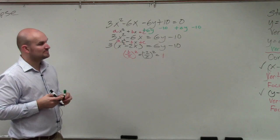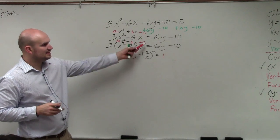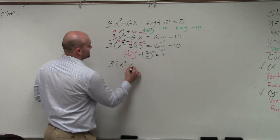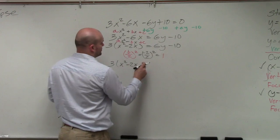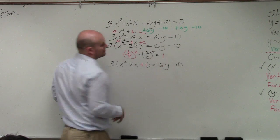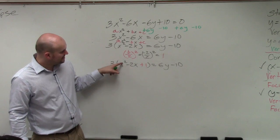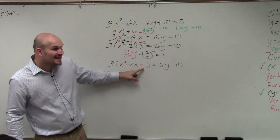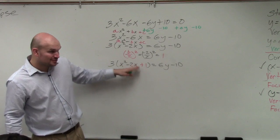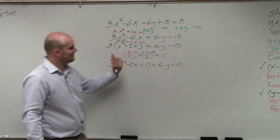b divided by 2 squared gives you the value c that you're looking for. So watch what happens. 3(x² - 2x + 1) = 6y - 10. I'll get to the whole adding on both sides in just a second. What I want you guys to see is x² - 2x + 1. That is a perfect square trinomial. You can factor this down. That is factorable to a binomial squared. That's what we need you guys to make that connection with.